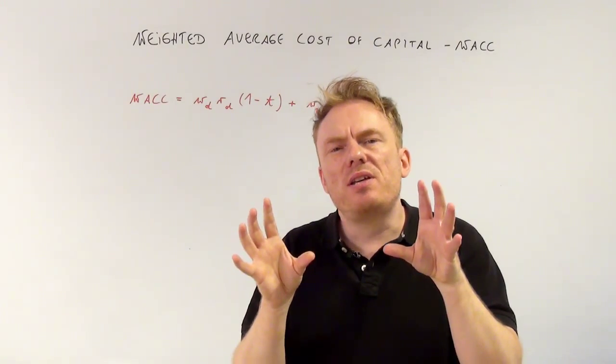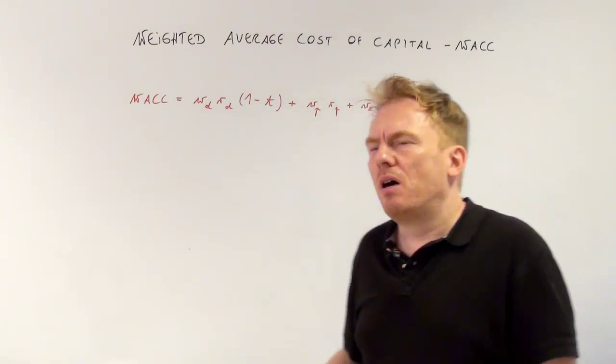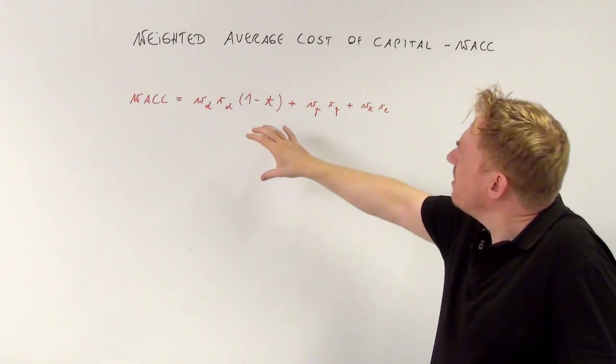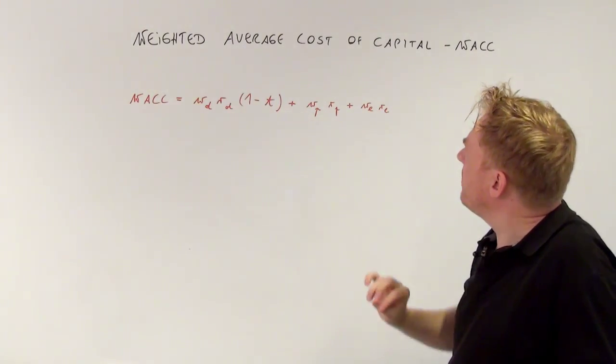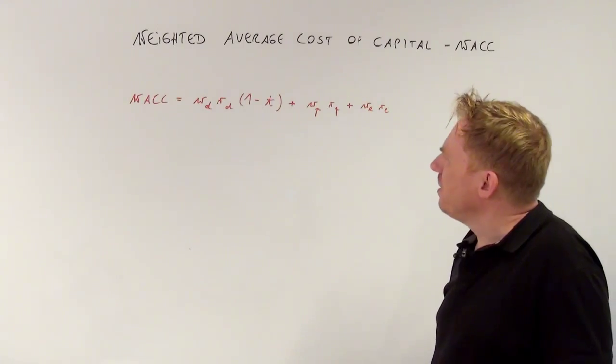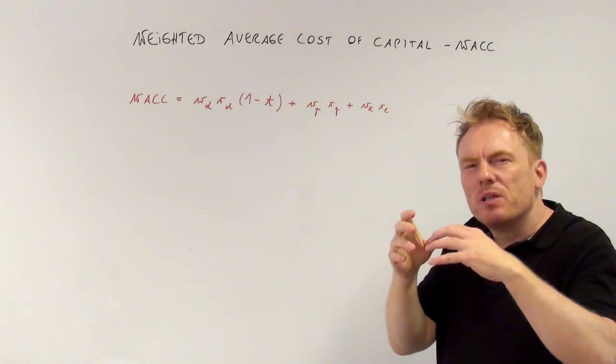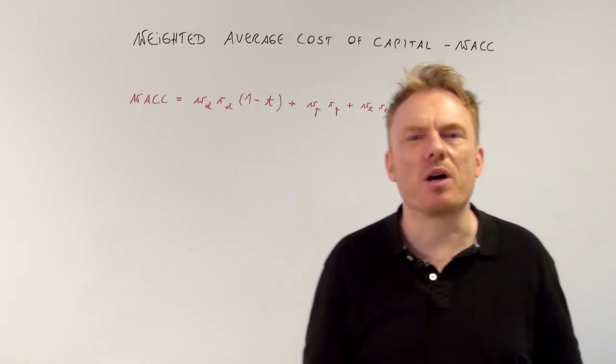So these different sources of capital are looked at in this very formula weighted average cost of capital. So there is a different view of those different sources. Thank you for watching.